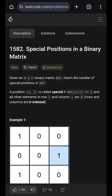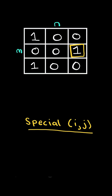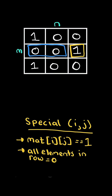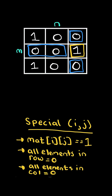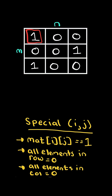Special positions in a binary matrix. A position i, j is called special if the value at that position equals 1, all elements in that row are 0, and all elements in the column are 0. For example, this position is not special because although the elements in the row are 0, all the elements in the column are not 0.